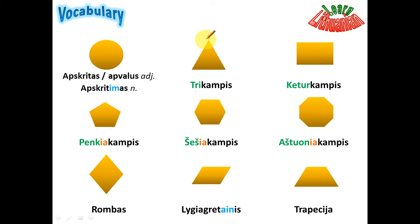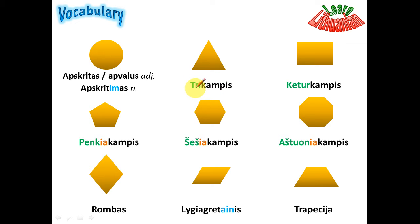Now let's take a note about the words for these shapes. You know 'kampas' means angle, and when there is a word made from two roots — like from the word 'three' and 'angle', like in English 'triangle' — the ending of the second word changes to '-is'. So all words made from two words have the ending '-is'.